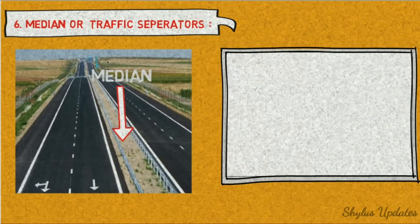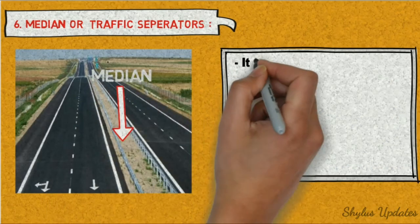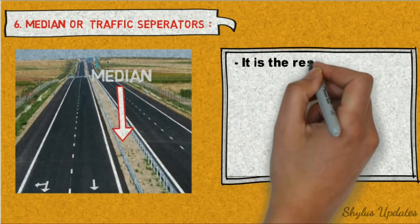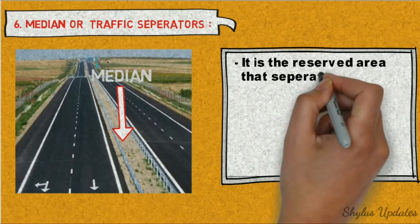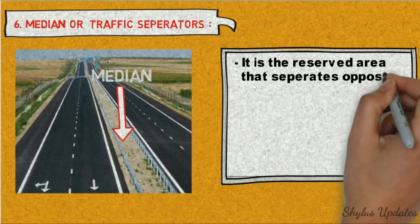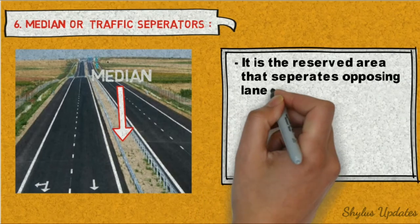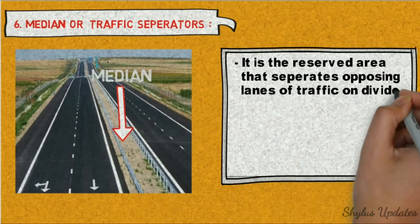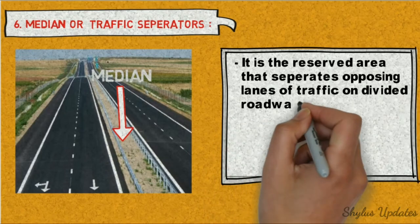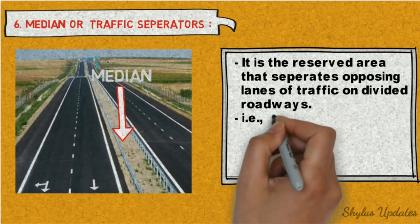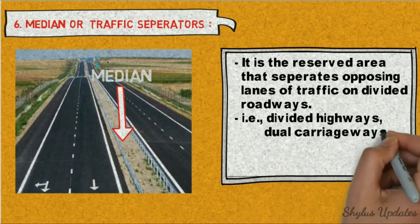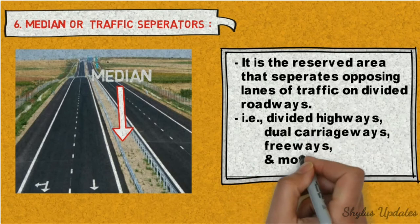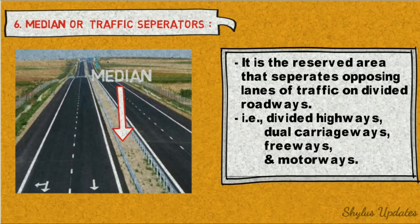Median or traffic separators. It is the reserved area that separates opposing lanes of traffic on divided roadways, i.e., divided highways, dual carriageways, freeways, and motorways.